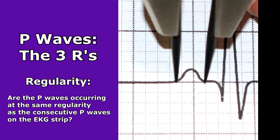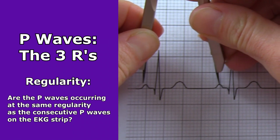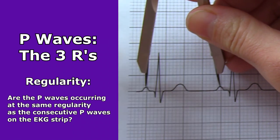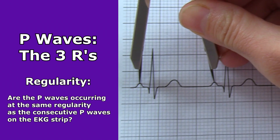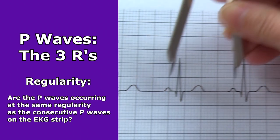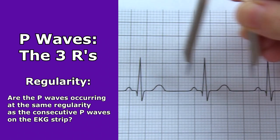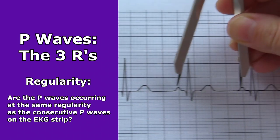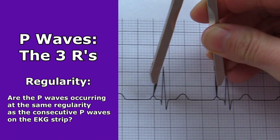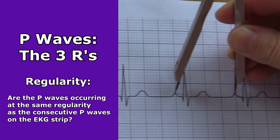First, regularity. Ask yourself: are the P waves occurring at the same regularity as the consecutive P waves on that EKG strip? With your calipers, start at the first P wave, spread to the second, and go from P wave to P wave to make sure they're all the same distance apart. If you don't have calipers, you can use paper.